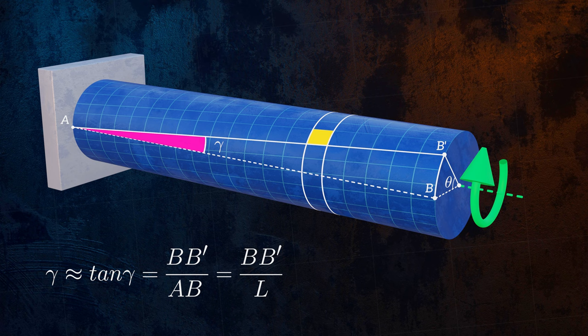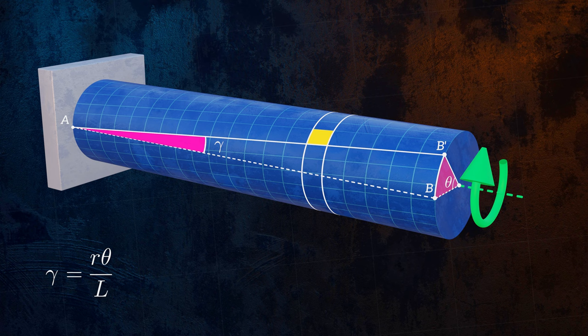We can calculate the length BB prime by realizing that it is the arc length of a circle with a radius R, covering an angle equal to the angle of twist theta. So the shear strain is equal to the radius of the bar multiplied by the angle of twist divided by the length of the bar.